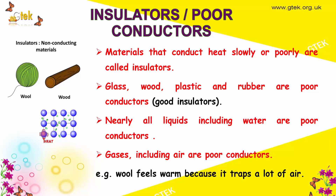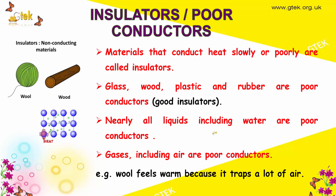Now let's see about insulators. Insulators are also called poor conductors — materials that conduct heat slowly or poorly. Some examples of insulators are glass, wood, plastic, and rubber, which are poor conductors and therefore good insulators.